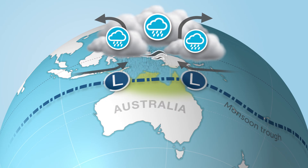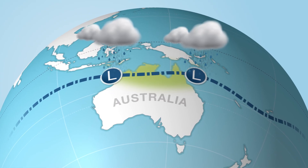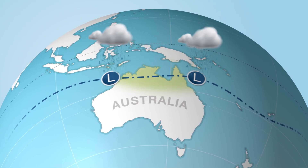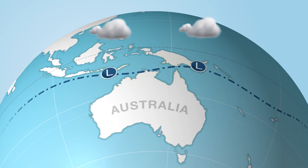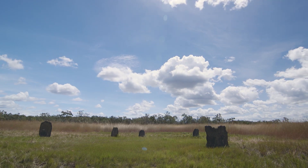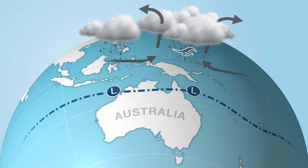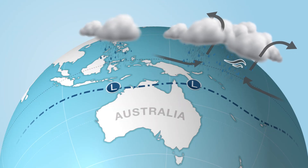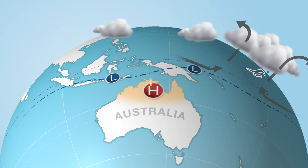At the start of the season, the MJO can encourage the monsoon trough to form. The monsoon trough can also go through periods when it is weaker or has moved north of Australia — this is called a break in the monsoon. As the MJO moves away from Australia, it can bring higher pressure systems and less cloud, causing this break.